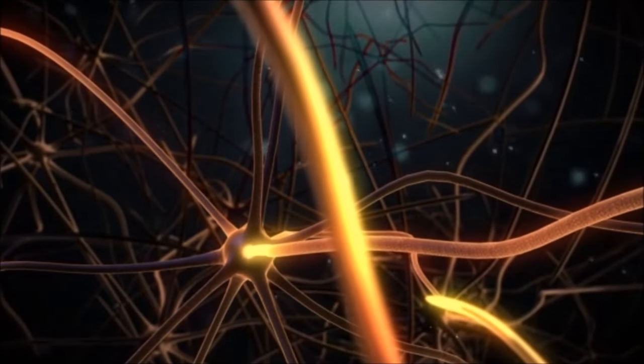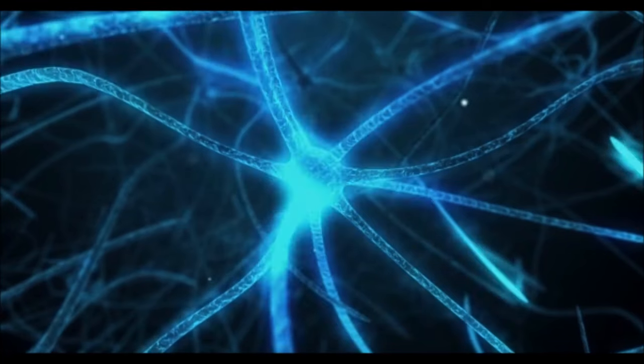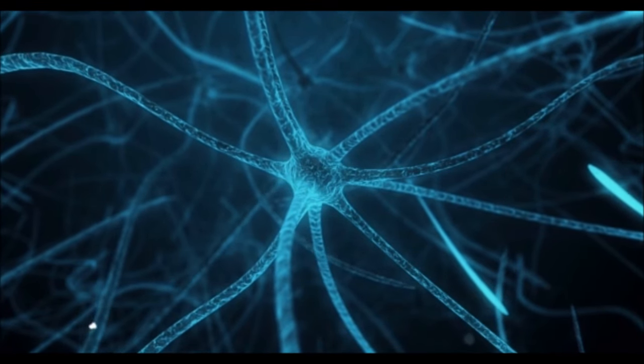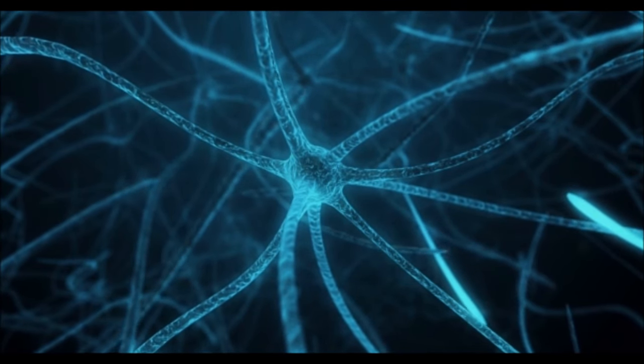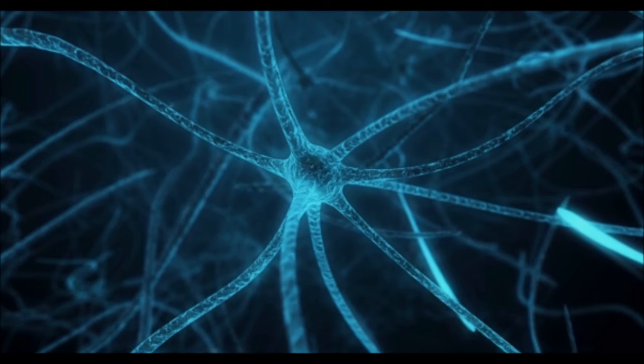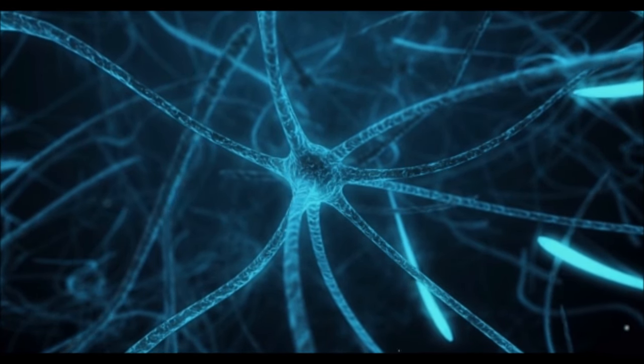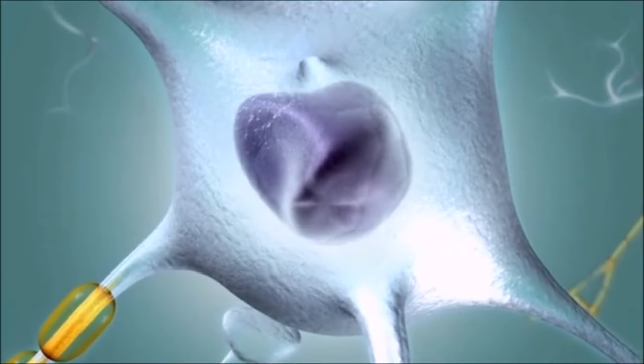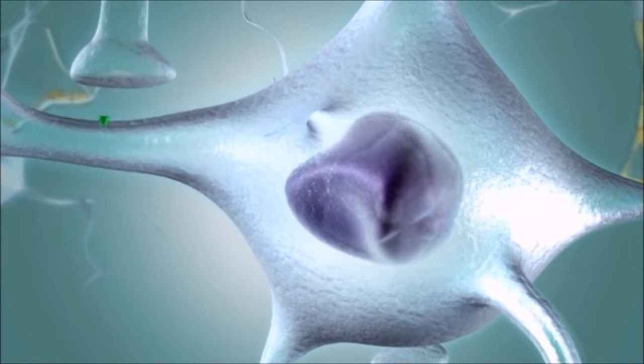Neurons are the basic building blocks of the nervous system and are specialized nerve cells adapted for information transmission. The brain, spinal cord, and other nervous system systems contain billions of neurons forming a complex network. These neurons receive, process, transmit, and store information. The main components of a neuron include the soma or cell body.